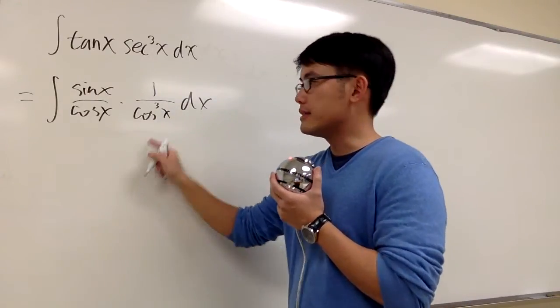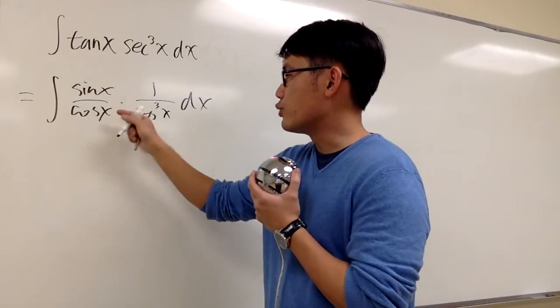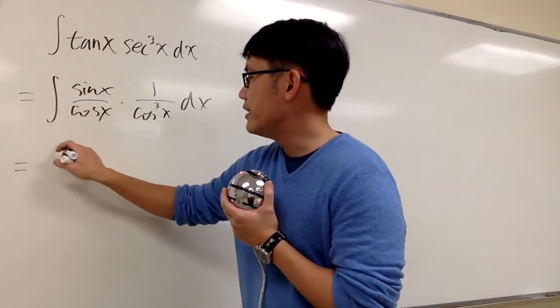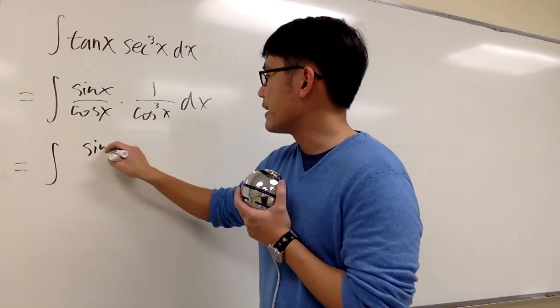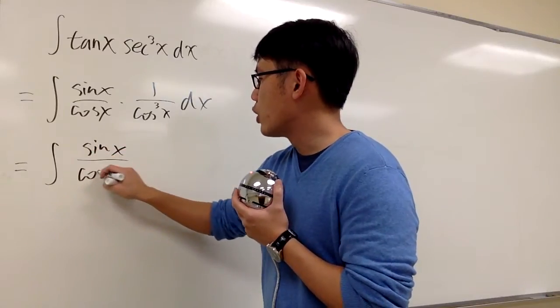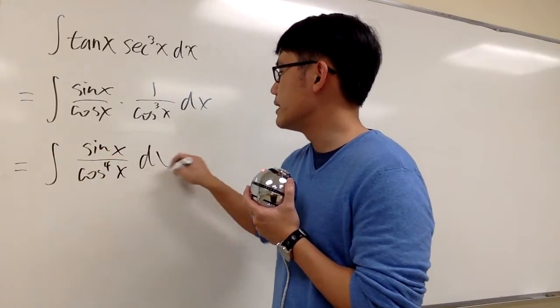And of course, when we multiply this, we will just get cosine to the fourth power on the denominator, and this is the integral of sine x over cosine to the fourth power x, dx.